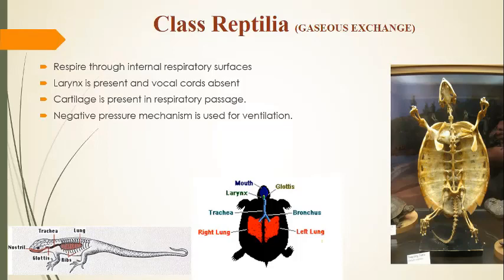The internal respiratory surface is inside the lungs. Larynx is present — the larynx is a voice box that protects the glottis and has vocal cords, though vocal cords are not always present with the larynx in reptiles. Cartilage is present in the respiratory passages to keep them open. Even when breathing stops, the passage remains open because of the cartilage in the respiratory passages.